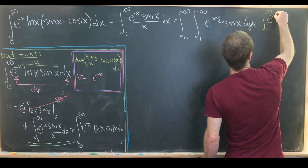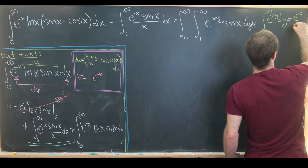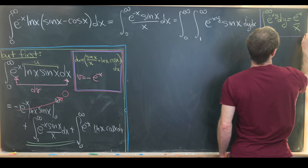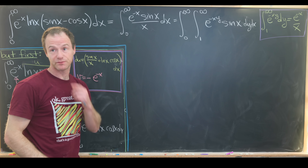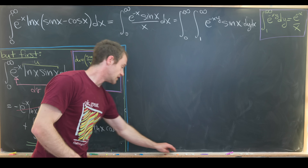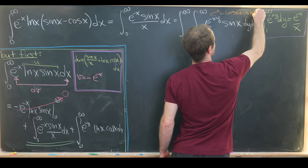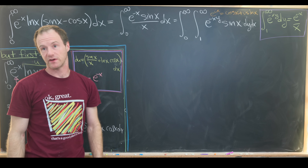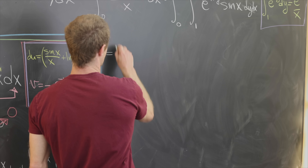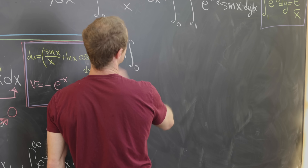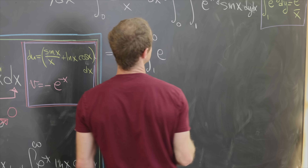To get an x in the denominator, we use a parameter trick: the integral from one to infinity of e to the minus xy dy equals e to the minus x over x. So we can write our goal integral as the double integral from zero to infinity and one to infinity of e to the minus xy times sine of x dy dx.